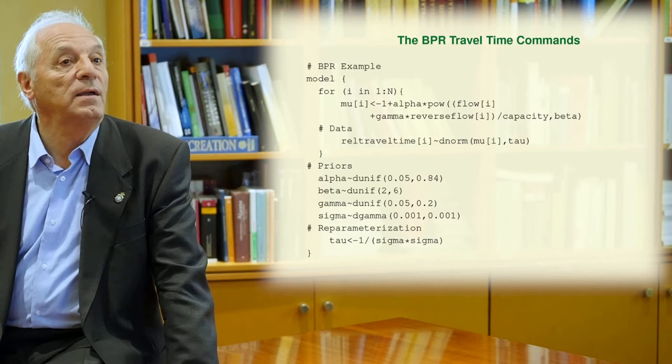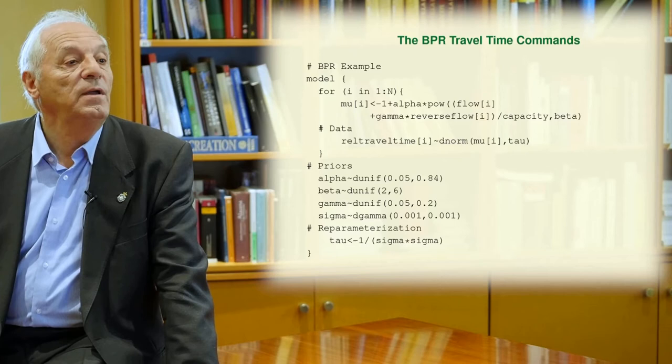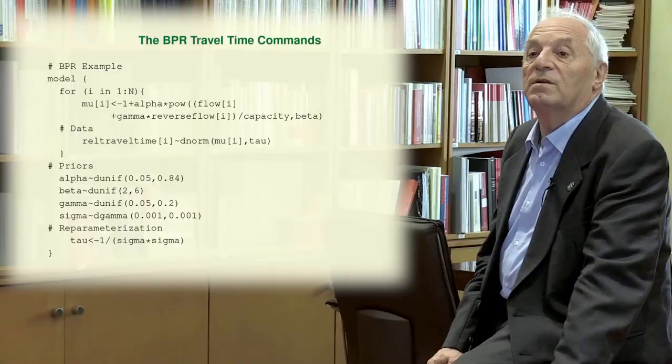And the sigma with a gamma, which is a non-informative gamma. And finally, you need to define the reparametrization because we use the dispersion tau and the standard deviation sigma. And you need to define what is the relation. And that is the one in the lower part of the transparency.